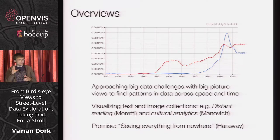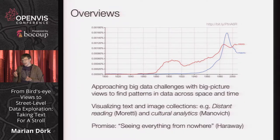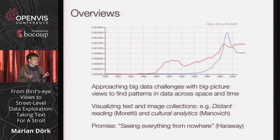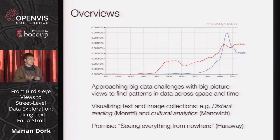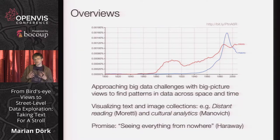Some concepts that have been thrown around, like distant reading by Franco Moretti — a macro approach to literary history — or cultural analytics promoted by Lev Manovich, apply data analytics to cultural collections. I think these initiatives are very useful, but especially in the cultural sphere when we are trying to make sense of our cultural legacy, they make a promise implicitly that we can see everything from nowhere. Here I'm citing Donna Haraway, who used that phrase in the late 80s criticizing objectivist, positivist science, arguing that more situated, more partial perspectives might yield more powerful insights.